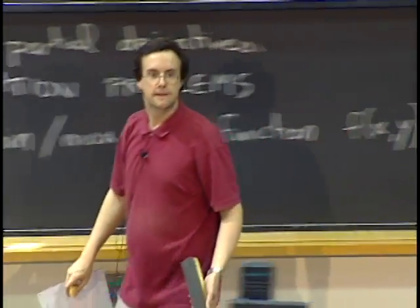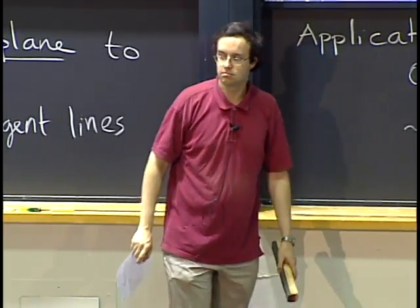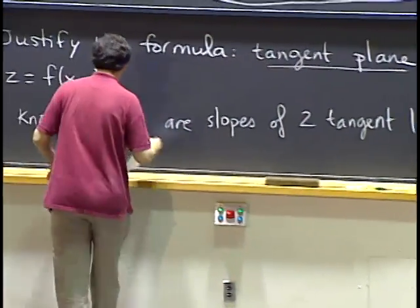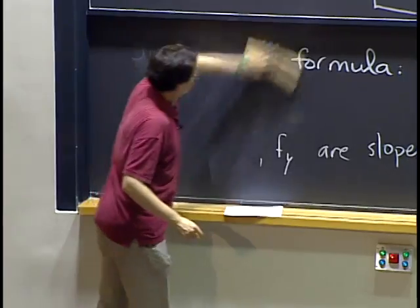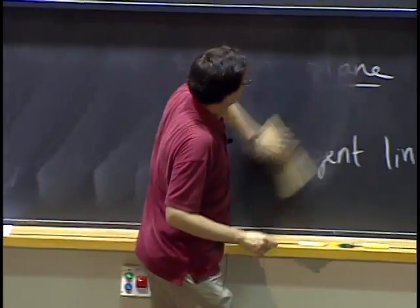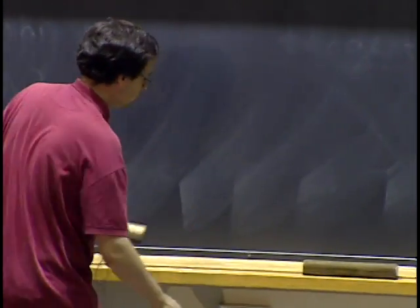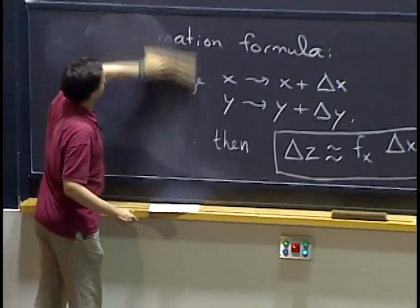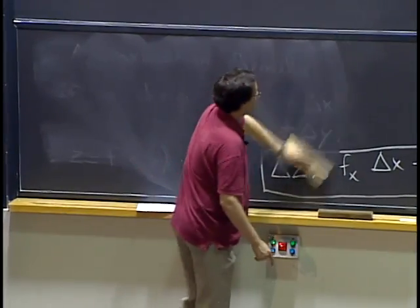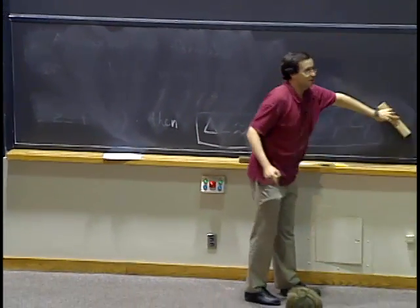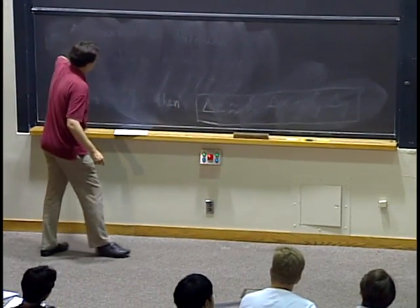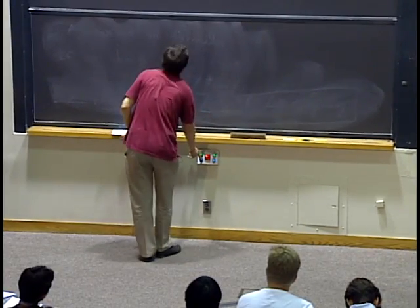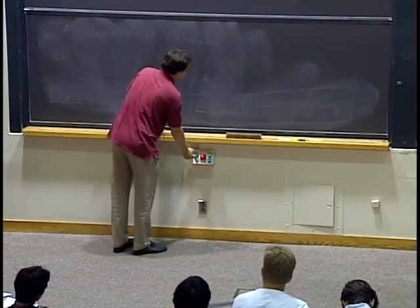The question you should have is: how do we know if it's a maximum or a minimum? For a function of one variable, we'd use the second derivative. We'll see tomorrow how to do that using second derivatives here — it's tricky because there are a lot of second derivatives. We'll have to figure out carefully what the condition should be. For now, let's try to understand things by hand.